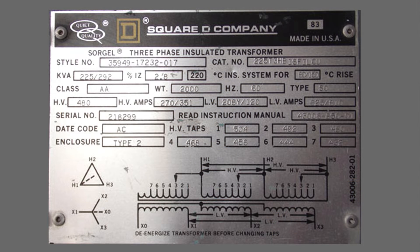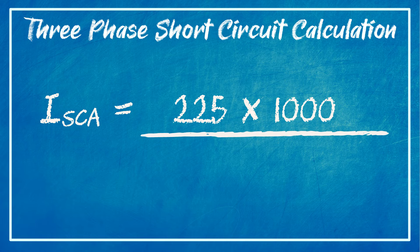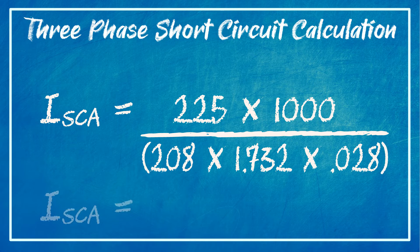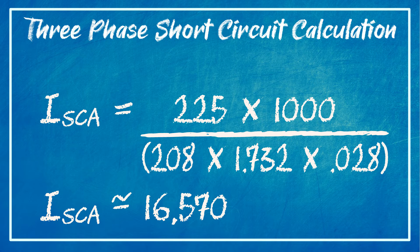Here's our next transformer. Notice that on this particular nameplate, there are dual ratings, and the rating we choose depends on the selected temperature rise. We will use the numbers on the left, which are for a 60 degree Celsius temperature rise. This particular transformer is rated at 225 kVA, 208 volt three-phase for the secondary, and 2.8% impedance. Plugging that into our formula: 225 times 1000 divided by (208 times 1.732 times 0.028) equals about 16,570 amperes.